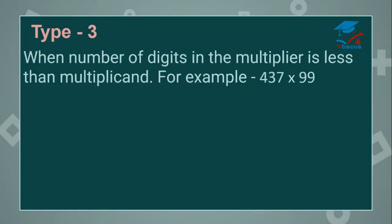Type 3: when the number of digits in the multiplier is less than the multiplicand — here the case is different. For example, 437 times 99. Here the digits in the multiplier are less than the multiplicand.